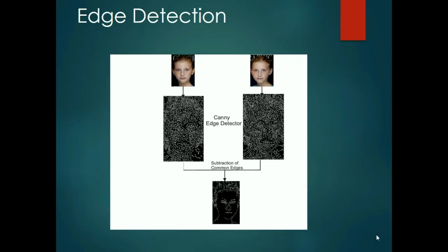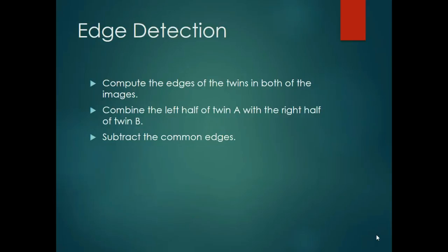This new image consists of edges which are present in twin A but not in twin B, and is therefore an indication of the edges unique to twin A. However, the edges present in this image cannot be quantified directly, so the entropies of the images are calculated.